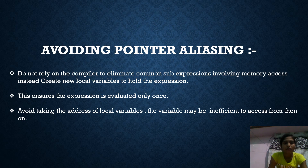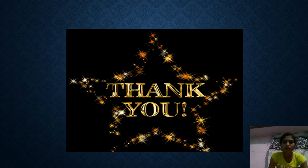To avoid pointer aliasing, do not rely on the compiler to eliminate common sub-expressions involving memory access. Instead, create new local variables to hold the expression — this ensures the expression is evaluated only once. Avoid taking the address of local variables, as the variables may be inefficient. By this, I end my presentation. Thank you one and all for your presence and attention.